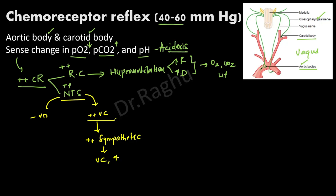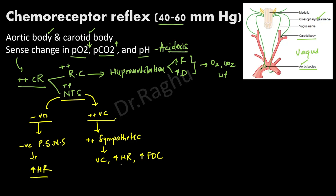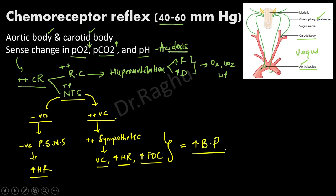Stimulation of the vasoconstrictor area activates the sympathetic nervous system, causing vasoconstriction, increased heart rate, and increased force of contraction. Inhibition of the vasodilatory area inhibits the parasympathetic nervous system, further increasing heart rate. Together, these effects raise blood pressure.